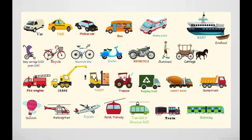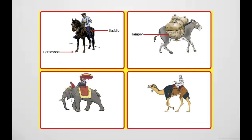Here are pictures of means of transport. Apart from these, we also use some special means of transport — mules and horses used in hilly areas, camels are used in deserts, and elephants are used in forest areas.